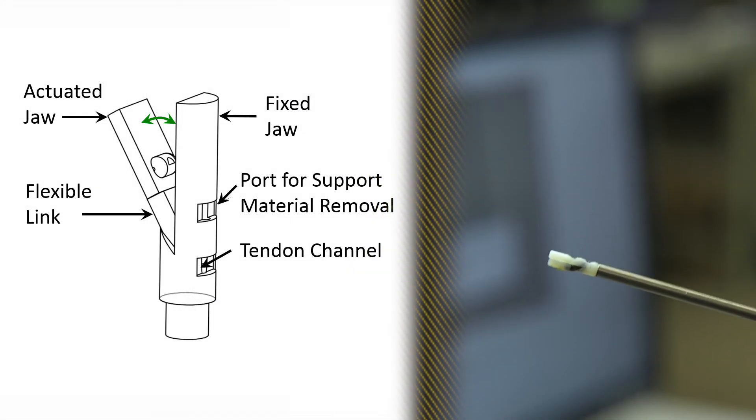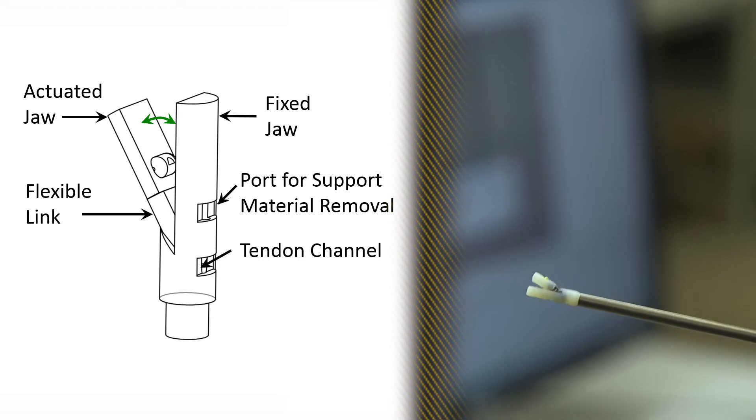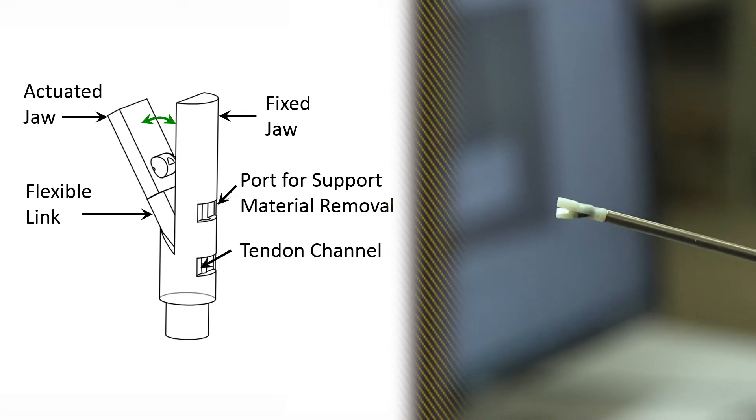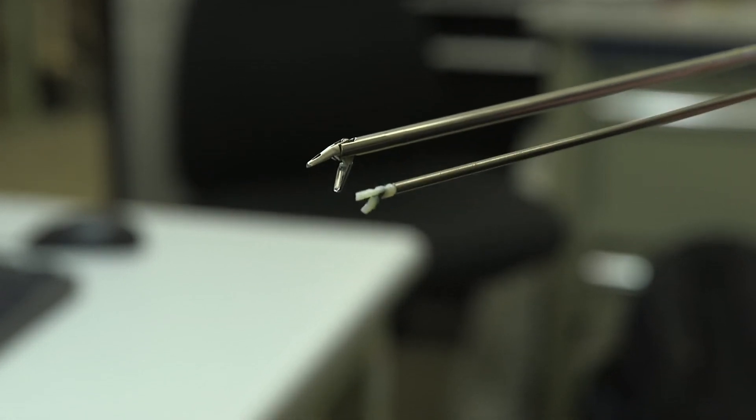And we also have a grasping tool, which is used to actually grasp the herniated material of the disc and move it out of the workspace. We've tested each of these instruments against the current ones that are on the market and they've met or exceeded the design requirements for these applications. So we're pretty excited about where the technology is right now.